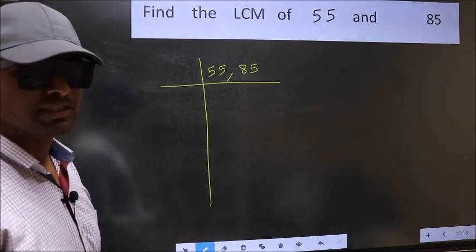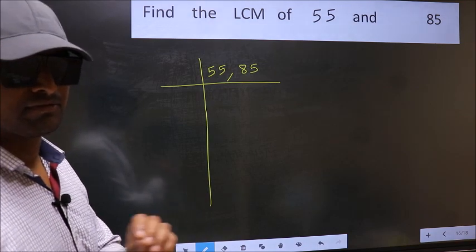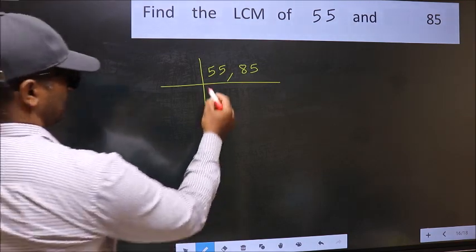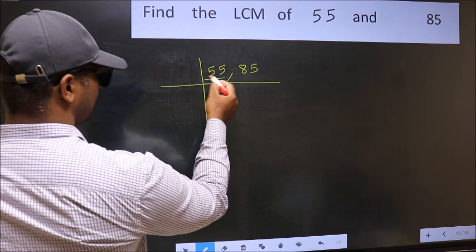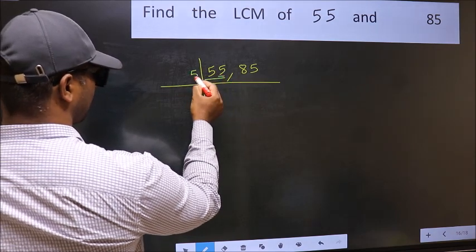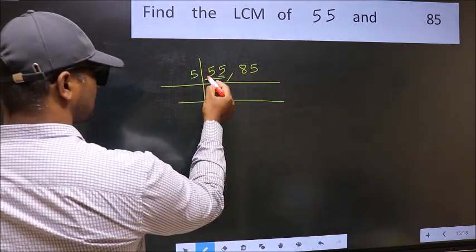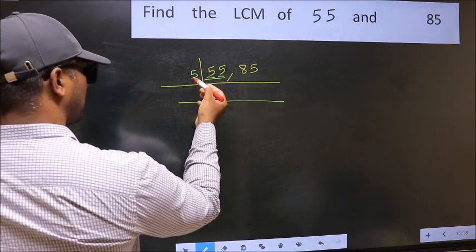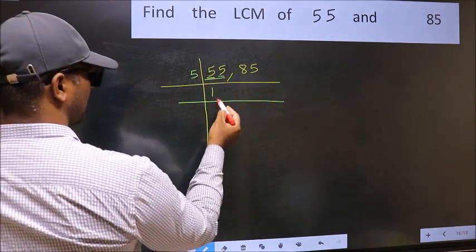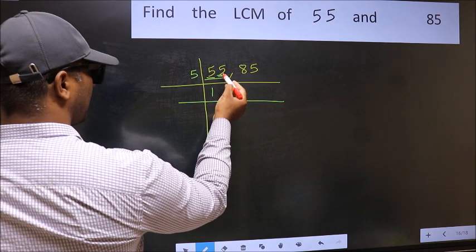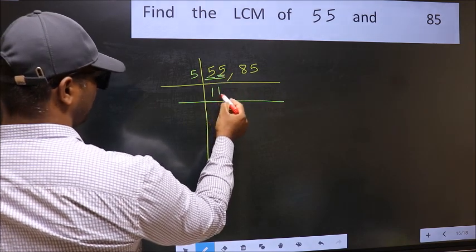Now you should focus on the first number which is 55 here. In this number, last digit 5, so take 5. First number 5, when do we get 5 in 5 table? 5 once 5. The other number 5, when do we get 5 in 5 table? 5 once 5.